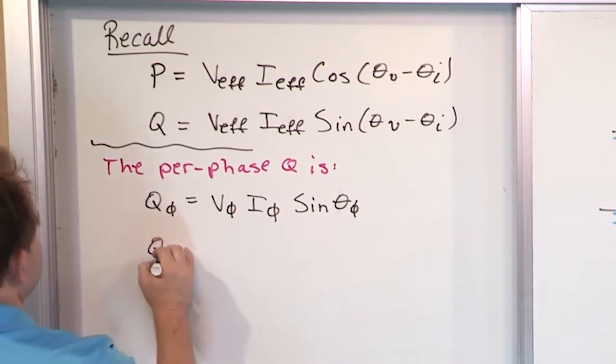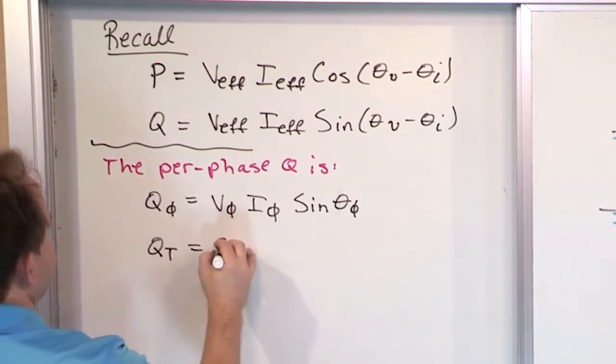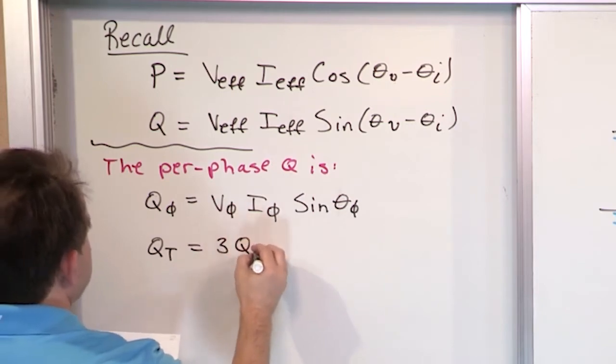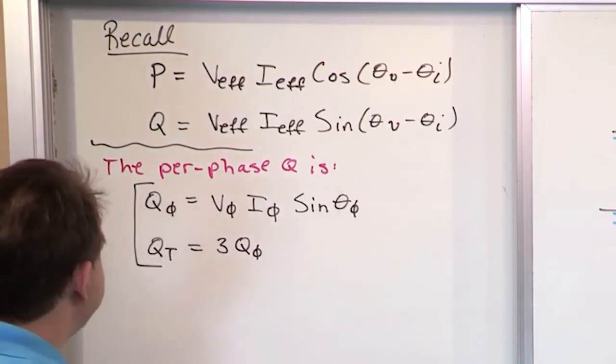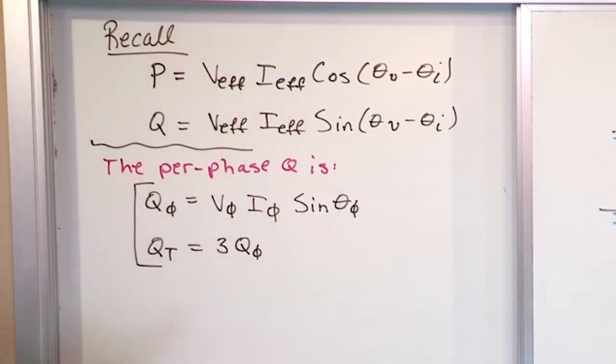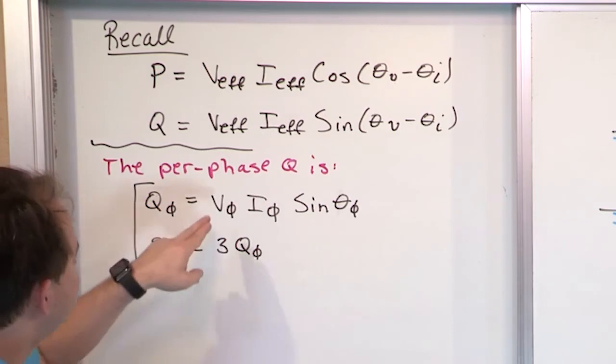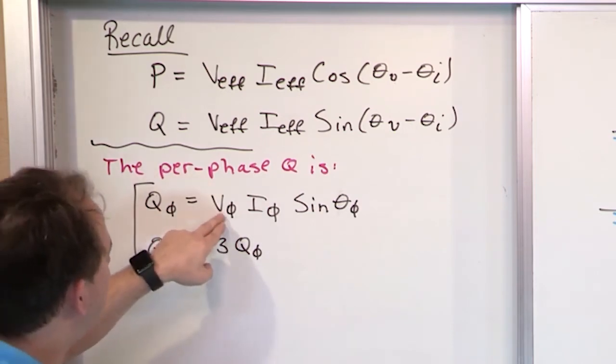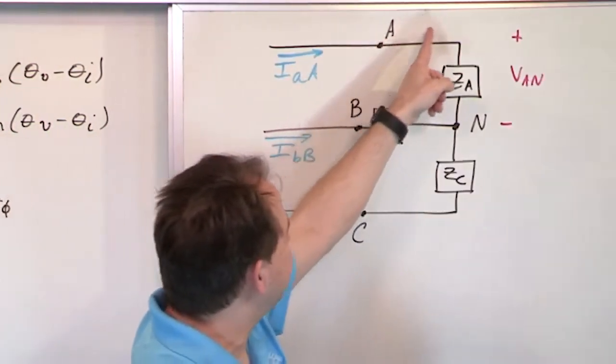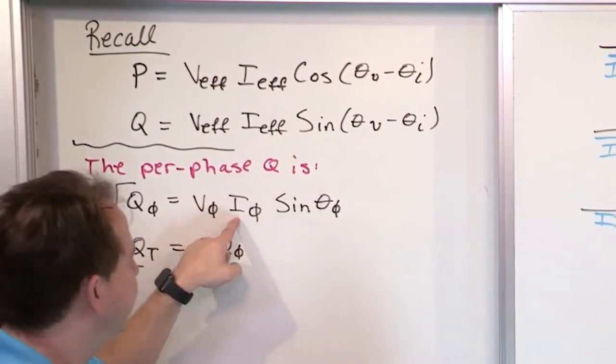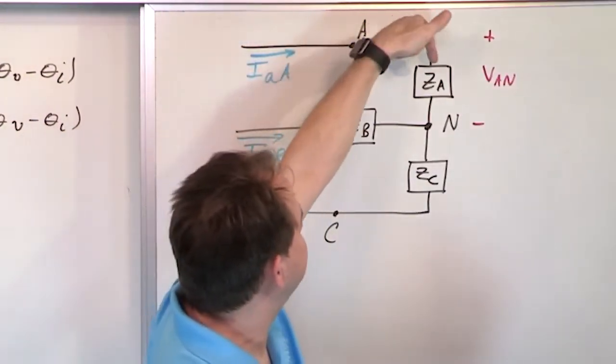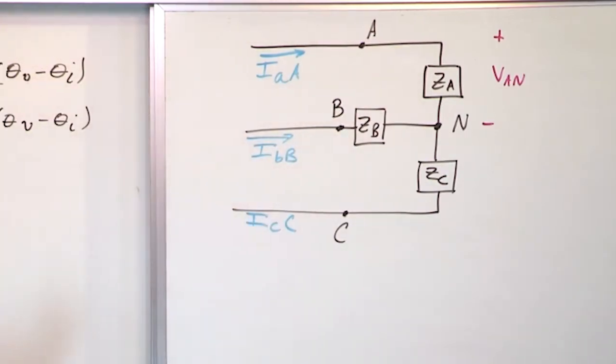And then we can say that the total power is just going to be three times the reactive power per phase. So I'm going to circle these because you'll see these written in your book. So if for some reason you calculate through the course of the problem statement, you know the phase voltage here, magnitude VAN, just the magnitude is all you need. And the current magnitude going into that circuit element, the magnitude of this current going through that circuit element, you put those two numbers there.